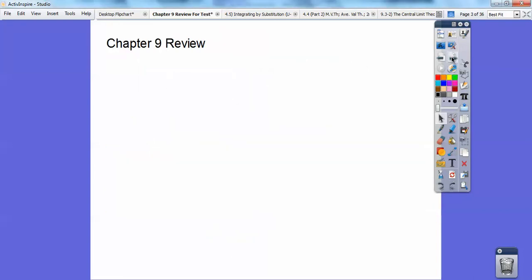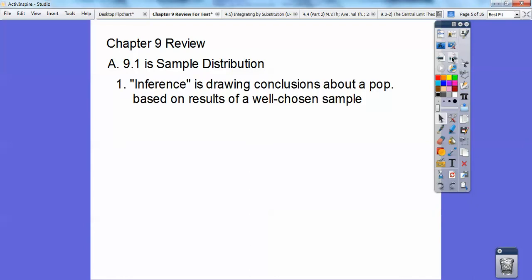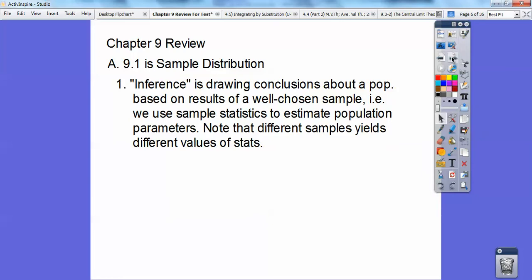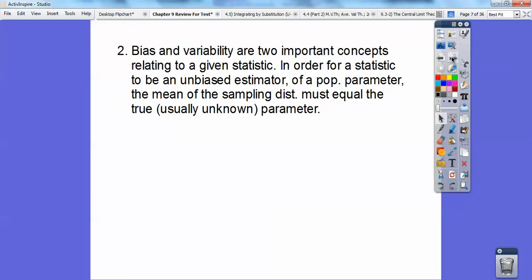So let's go ahead, chapter review for sampling distributions. Inferencing is drawing conclusions about a population based on the result of a well-chosen sample. So we use the sample statistics to estimate about your population parameters. Note that different samples yield different values in your statistics. Bias and variability are two important concepts related to a given statistics.